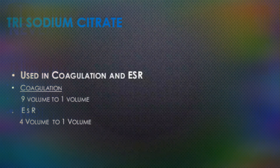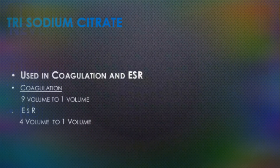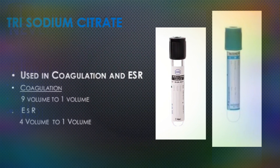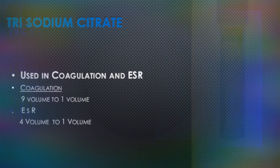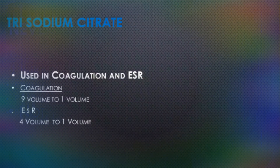The second important anticoagulant is trisodium citrate, which is the anticoagulant of choice for coagulation studies. Trisodium citrate is used in two different contexts: for ESR (erythrocyte sedimentation rate), four volumes of blood are diluted with one volume of sodium citrate solution; and for coagulation studies, nine volumes of blood are added to one volume of sodium citrate.